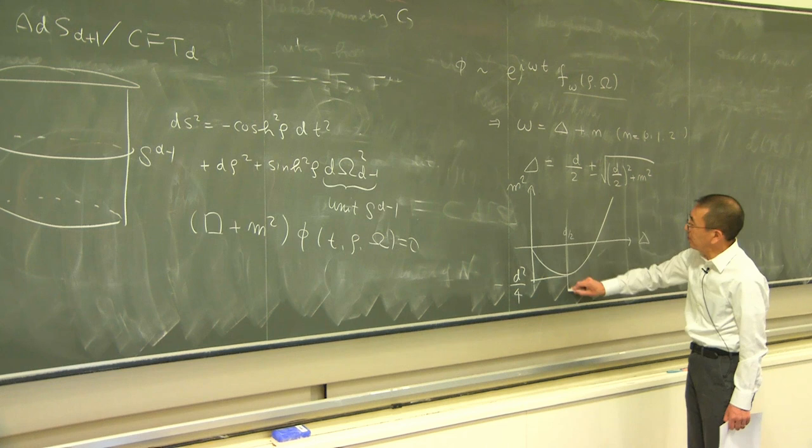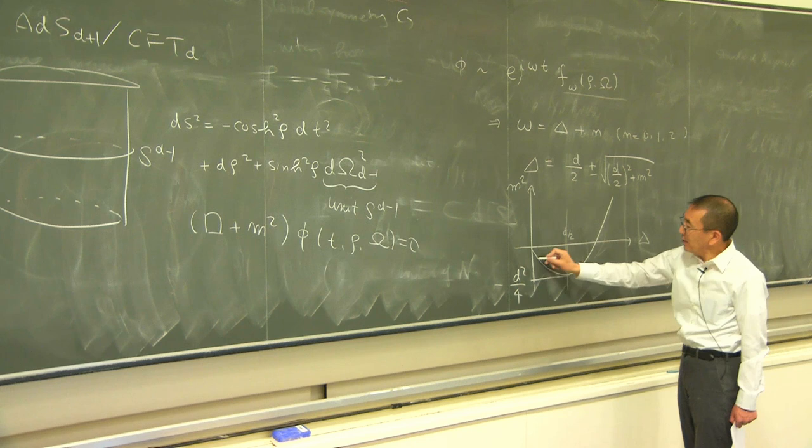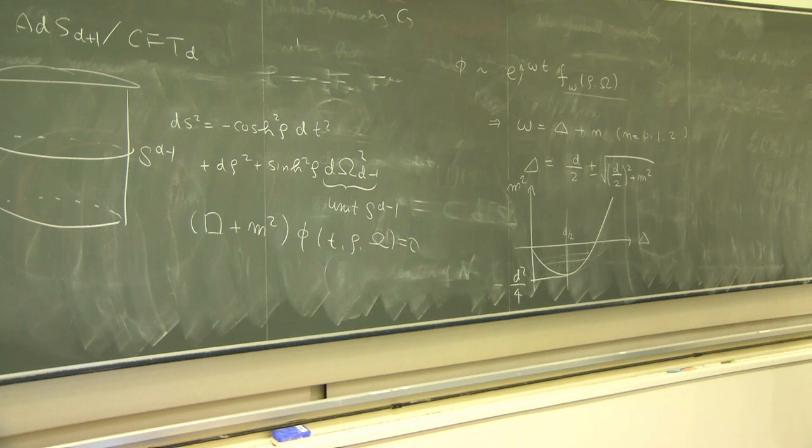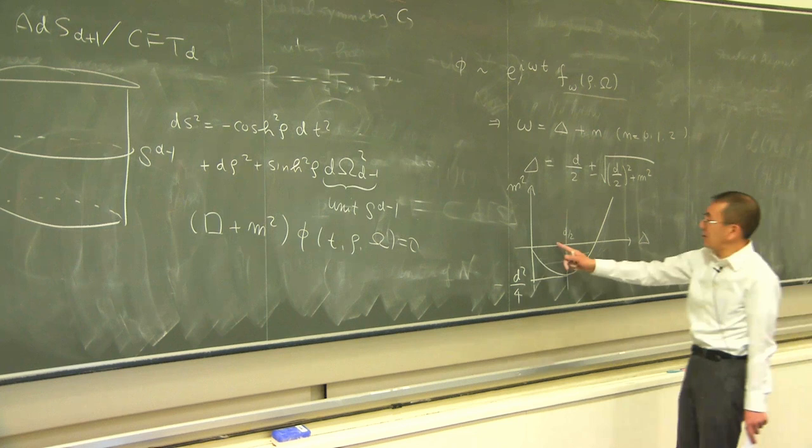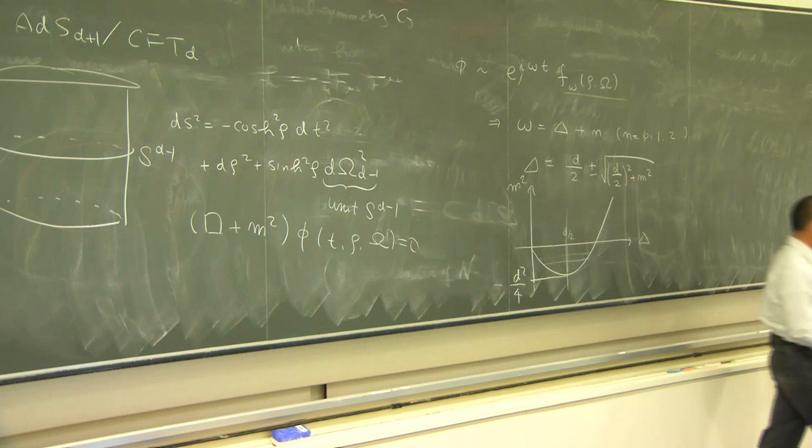In a certain range, for a given mass there are two choices of delta, and it depends on the kind of boundary condition that you impose for the scalar field. If you have a conformal field theory operator whose delta is smaller than D/2, then you have to choose an appropriate boundary condition.